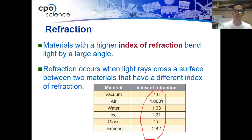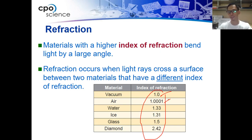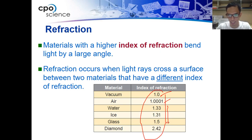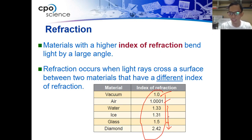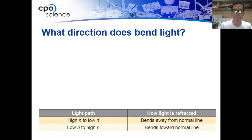Light travels fastest in a vacuum, followed by air. There is a small difference between how light travels in a vacuum and how light travels in air. As the index of refraction increases, expect that the angle of refraction also increases.